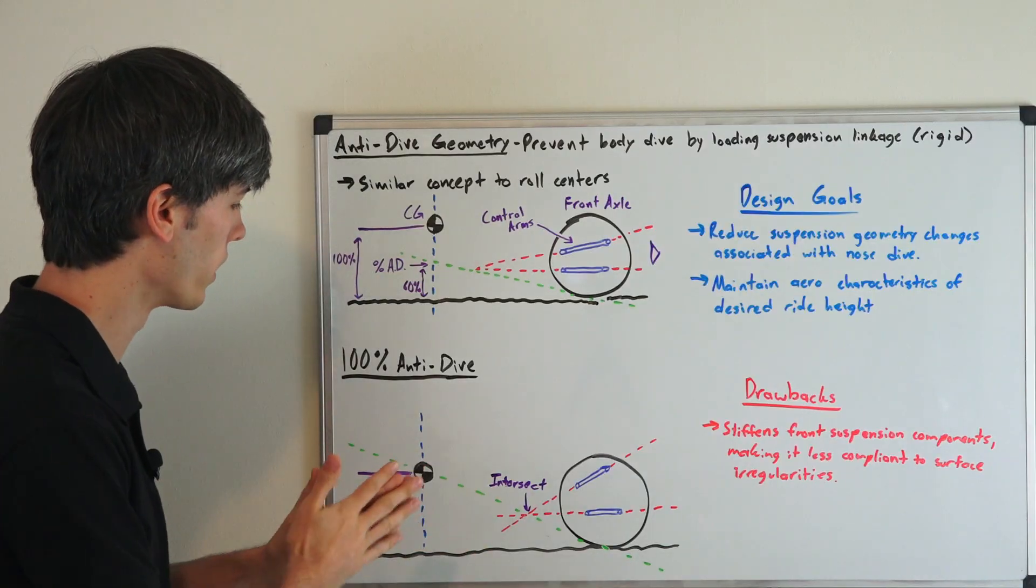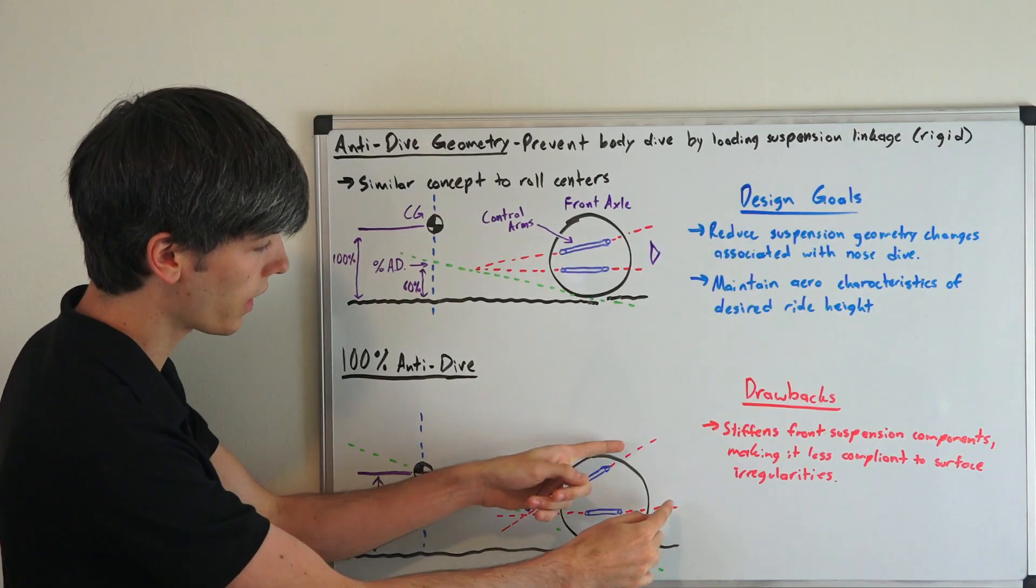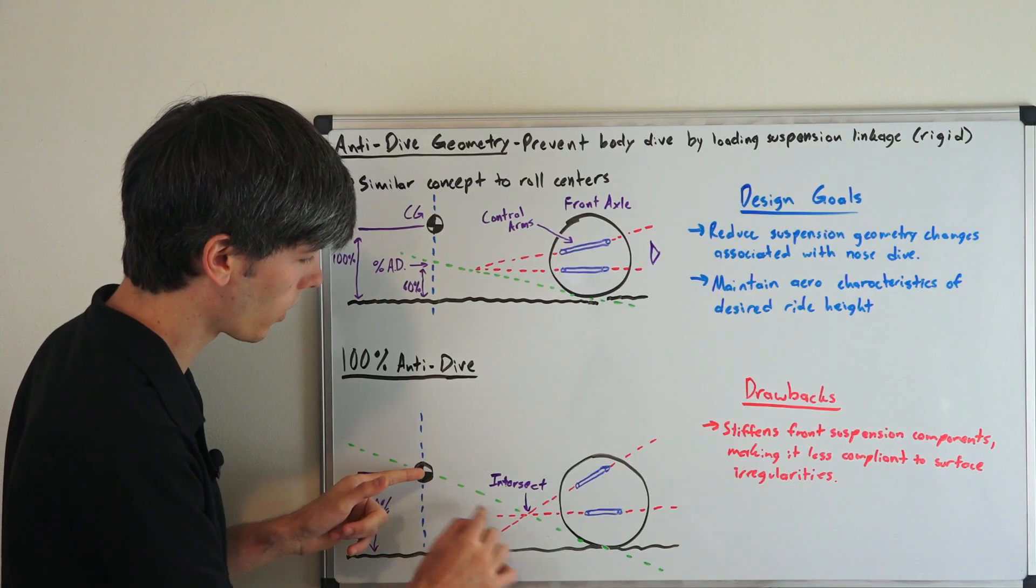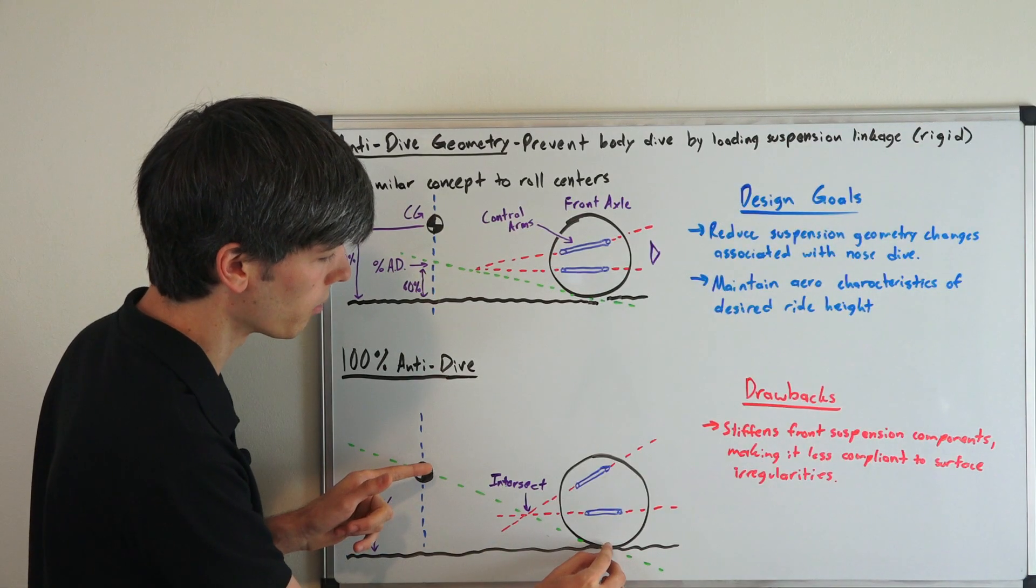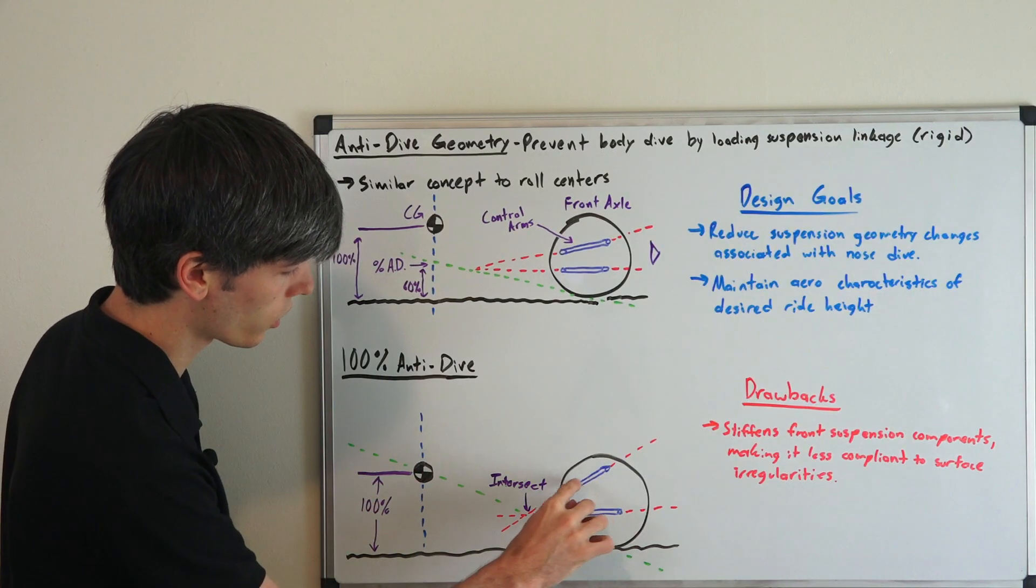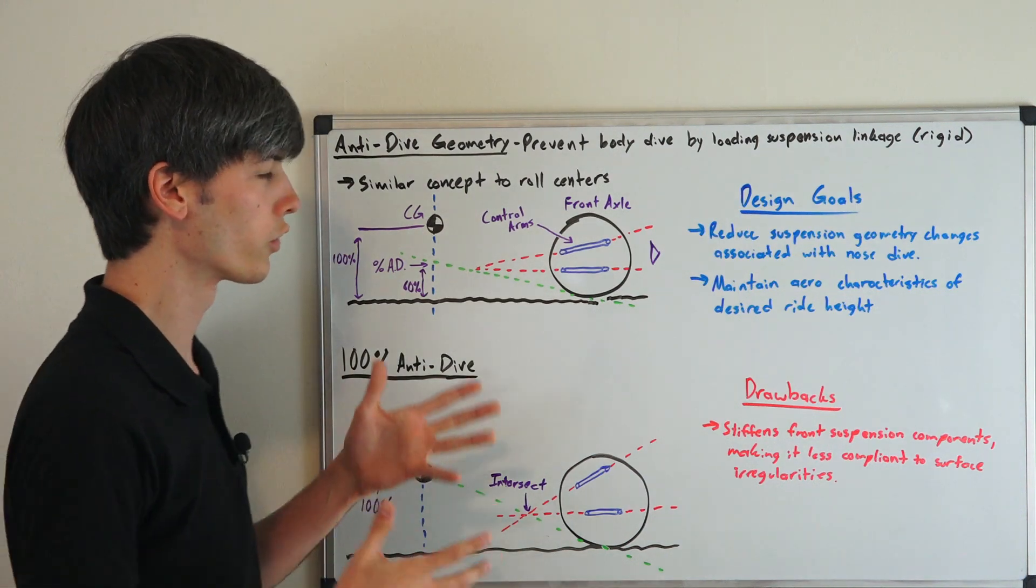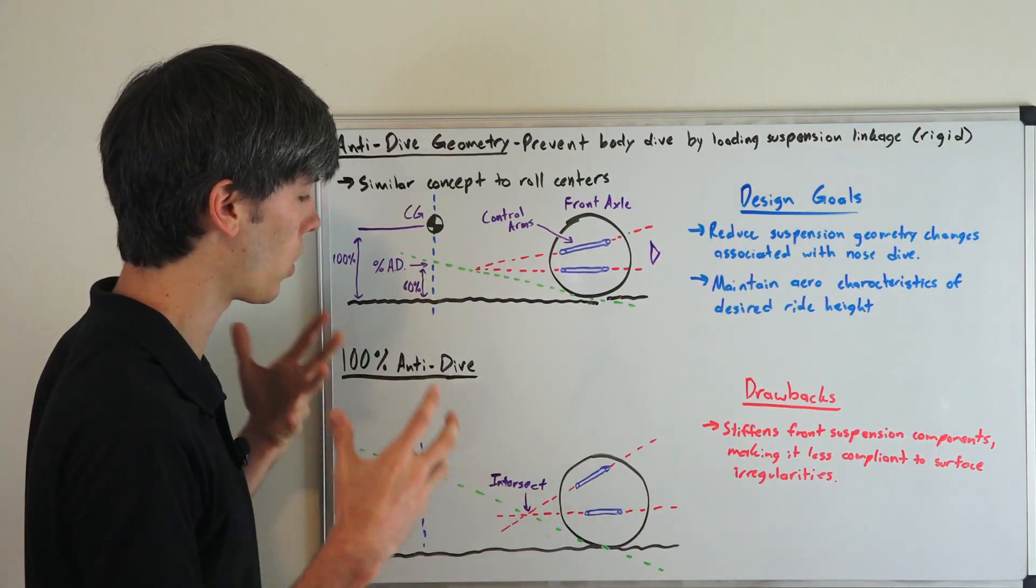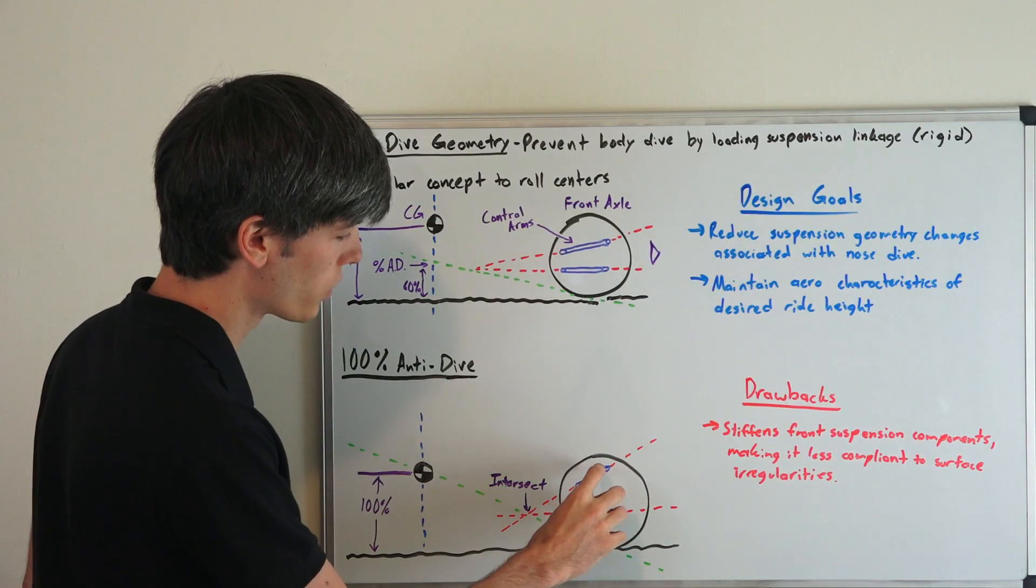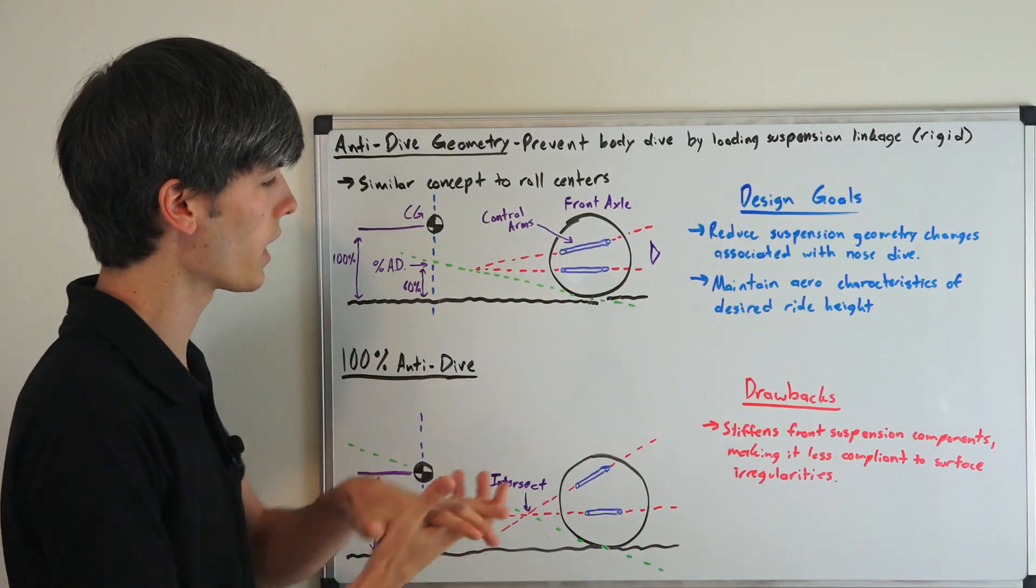Something with 100% anti-dive geometry: essentially what you're doing is the line where the suspension components intersect will lie on the line connecting the center of gravity and the point beneath the tire. As long as the intersection of these suspension components occurs on this line, you're going to have 100% anti-dive. So what that means is all of the load transfer, all of the forces when you're braking, are going to be passing through these suspension arms rather than through the spring and damper.